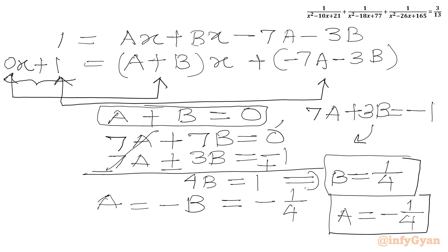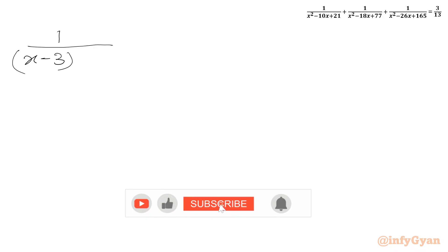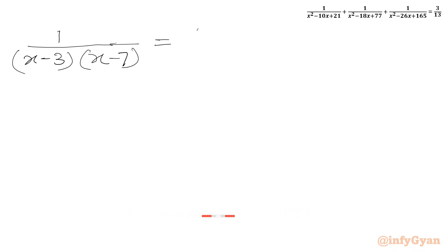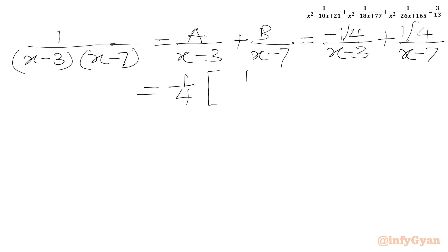Substituting both values, the first term 1 over (x minus 3)(x minus 7) equals A over (x minus 3) plus B over (x minus 7), which becomes minus 1 over 4 over (x minus 3) plus 1 over 4 over (x minus 7). Factoring out 1 over 4, we get one quarter times [1 over (x minus 7) minus 1 over (x minus 3)].